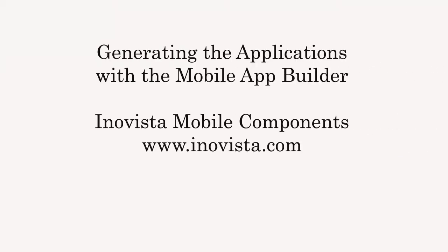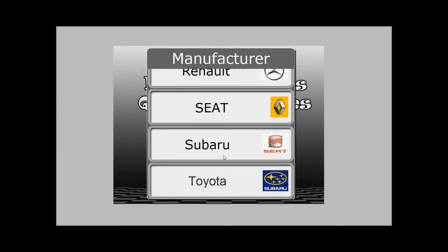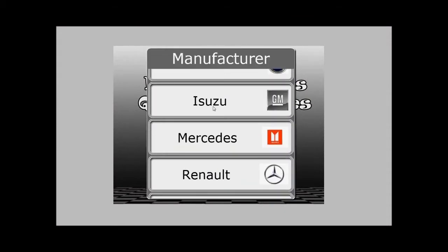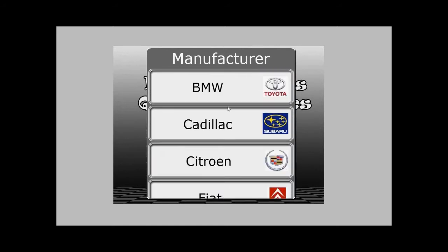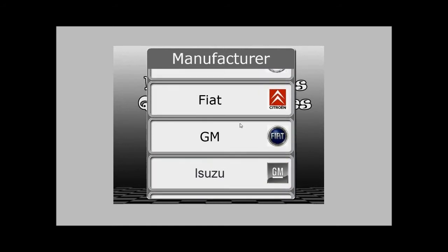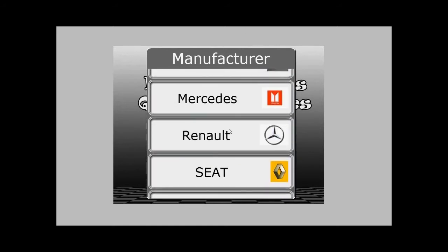In this video I'm going to look at using the Inovista mobile list to simulate the type of animated list that is commonly used in mobile devices. The list will be styled with a background image and each item in the list will have its own icon. Here we can see an example of what we will create. We use a button to open the list, touch scroll through the list and then tap the value we want to select. The button is then updated with that value.